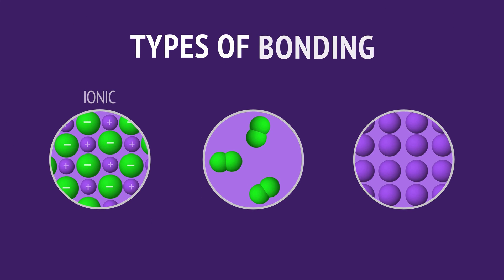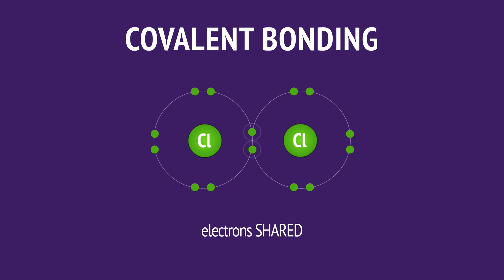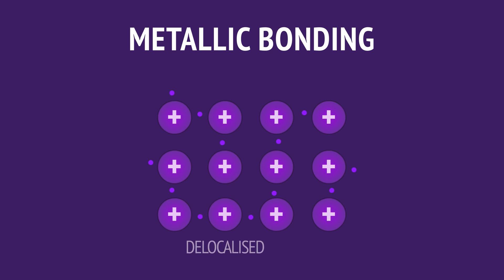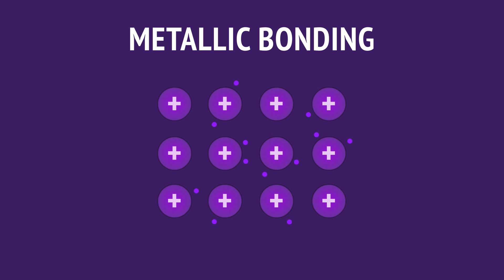In this video, we've looked at the three primary types of chemical bonding: ionic bonding resulting from the transfer of electrons from a metal to a non-metal; covalent bonding resulting from shared electrons between non-metals; and metallic bonding, where free electrons are attracted to the positive cores of metallic atoms.